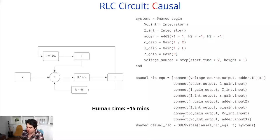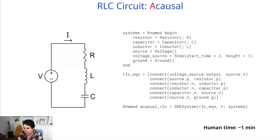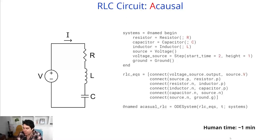What does the RLC circuit look like in an acausal model diagram? We simply have a resistor, capacitor, inductor, voltage source, and ground. We say what to connect: the positive part of the voltage source to the positive pin of the resistor, negative pin of the resistor to the positive pin of the inductor, and so on. We just list the connections and this is our system. Human time to create this was about one minute — a major difference in complexity. This is actually the same modeling language, since acausal modeling languages can also represent causal models.